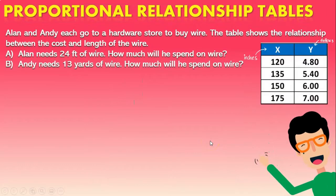Today we're going to be taking a look at a very interesting problem in which we have a proportional relationship table. The problem says that Alan and Andy each go to a hardware store to buy wire. The table shows the relationship between the cost and the length of the wire. Situation A asks: Alan needs 24 feet of wire, how much will he spend on wire? And also, Andy needs 13 yards of wire, how much will he spend on wire?